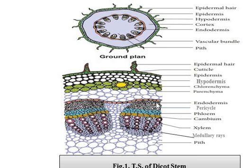Then we have the pericycle. The pericycle of a dicot stem is a layer found between the endodermis and the vascular cylinder. Just inside the endodermis, you have some cells that are called pericycle, and they are generally chlorenchymatous in nature, depending upon the condition or nature of the plant. Then we will talk about the vascular bundles. The most important feature of the dicot stem is that the vascular bundles are all arranged in a ring form.